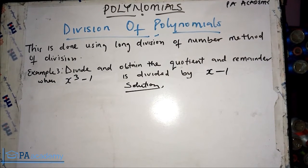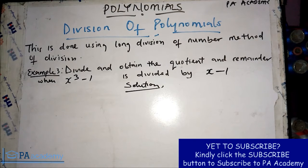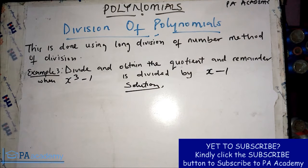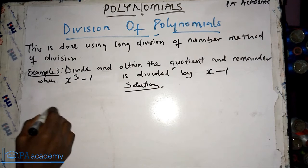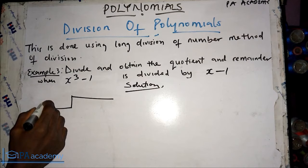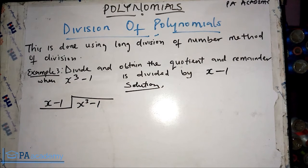Hello and welcome back to PA Academy. This is the continuation of the example we are looking at under division of polynomials — this is Example 3. If you missed Example 2 or the previous parts, kindly check the description for a link. In Example 3, we are looking at: divide and obtain the quotient and remainder when x³ minus 1 is divided by x minus 1. Let's draw the long division sign with x minus 1 on the outside and x³ minus 1 inside.